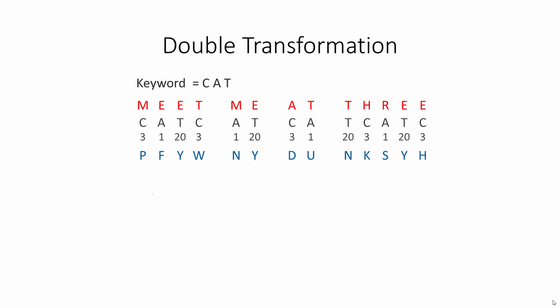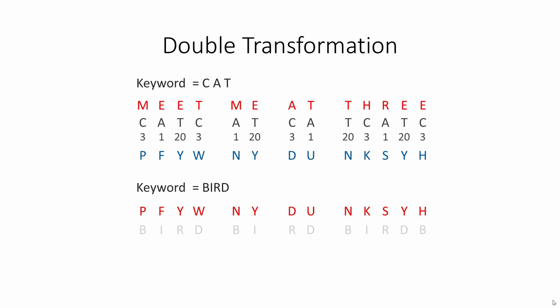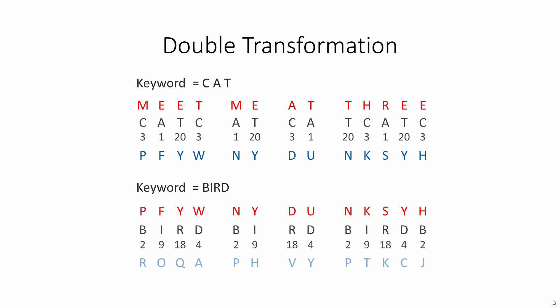If you wanted to make things really difficult for a hacker, you could encrypt the encrypted text with a second keyword. Here's the text that was encrypted earlier using the word 'cat' — now let's encrypt the ciphertext with the keyword 'bird'. First, write down the keyword repeatedly under the text that you want to encrypt, then get the position of each key letter, and then substitute according to these numbers. Perhaps you can think of some more improvements to the Keyword Cipher.